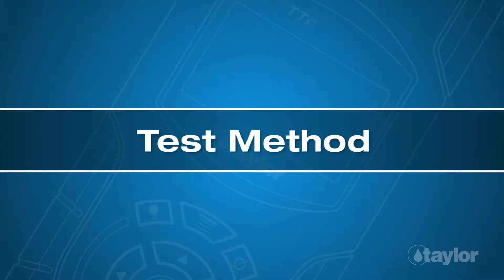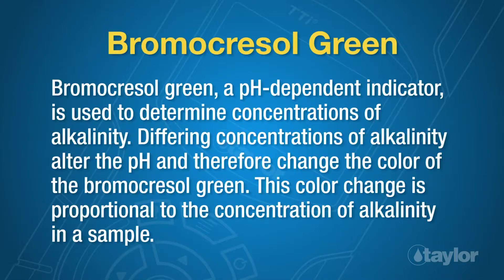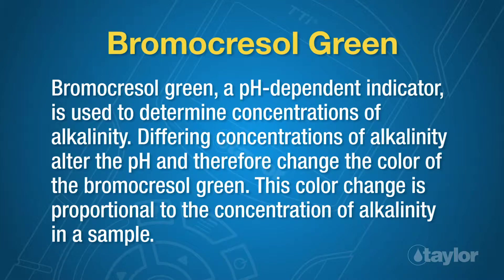Test Method: Bromocresol green, a pH-dependent indicator, is used to determine concentrations of alkalinity. Differing concentrations of alkalinity alter the pH and therefore change the color of the bromocresol green. This color change is proportional to the concentration of alkalinity in a sample.